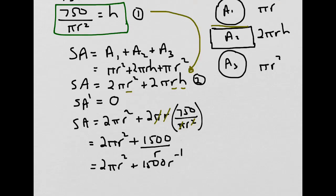Now we can take the derivative of the surface area using the sum rule and the power rule. Our derivative SA' equals — for the first term, using the power rule, we get 4 pi r. The second term gives us minus 1500 r to the minus 2. That represents our derivative.